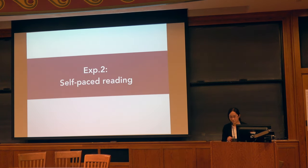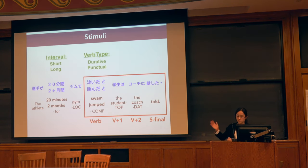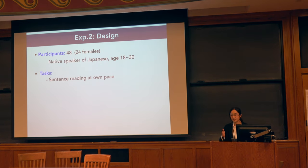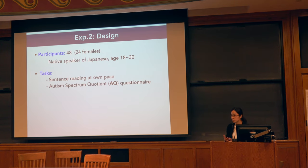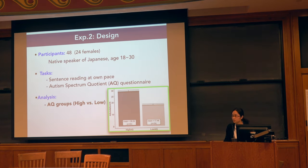Next, we investigated real-time comprehension profiles in a self-paced reading experiment, focusing on four regions of interest: the verb, two regions following the verb, and the sentence-final region. Forty-eight participants were recruited and read sentences segment by segment at their own pace. Participants also completed the Autism Spectrum Questionnaire developed by Baron-Cohen et al. in 2001, a measure of autistic tendency usable in typically developing populations. In data analysis, participants were separated into two groups based on their AQ score — high versus low — with a significant difference between groups.